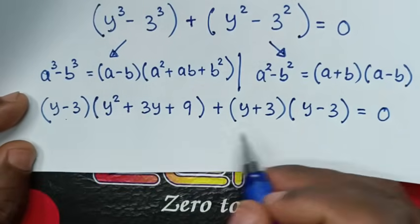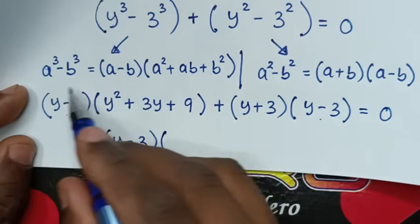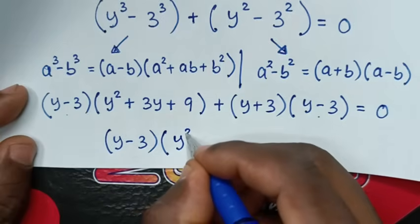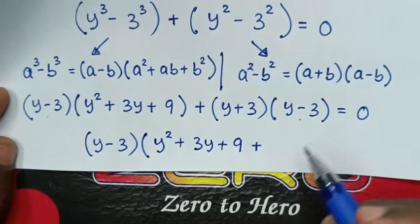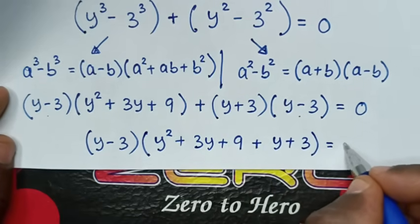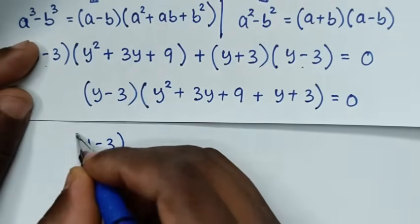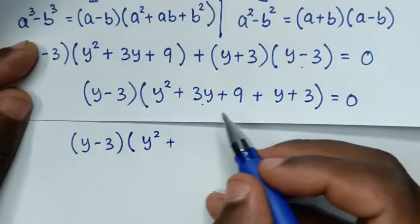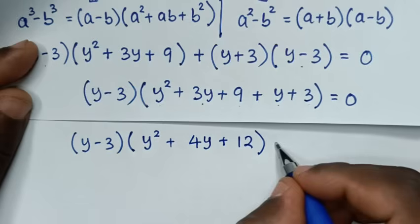Since (y-3) is common, we factor it out. Combining the remaining terms, 3y plus y is 4y, and 9 plus 3 is 12. So the full factored form is (y-3)(y² + 4y + 12) equals 0.